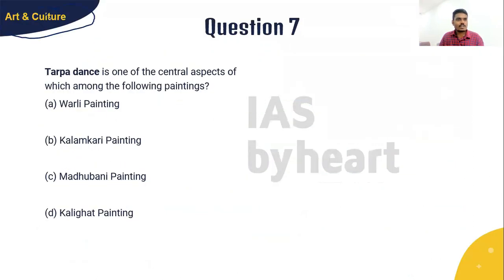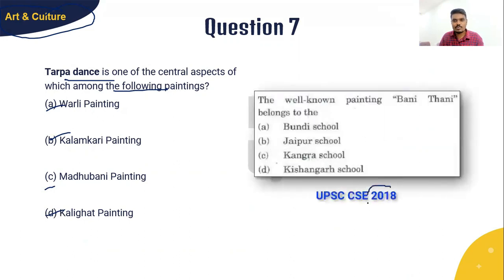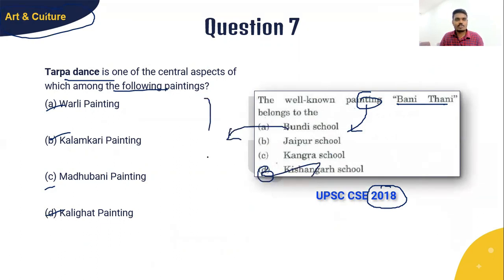Question 7 is taken from the culture topic: Tarpa dance is one of the central aspects of which among the following paintings? The options are: A) Warli painting, B) Kalamkari painting, C) Madhubani painting, D) Kalighat painting. This question has been inspired from the 2018 question paper, where a question about Bani Thani painting asked which school it belongs to — the correct answer was Kishangarh school. Based on that formula, this question has been formulated. I will give you 10 seconds to solve.